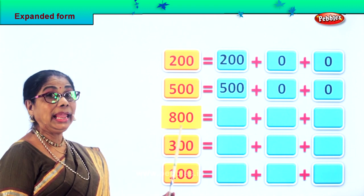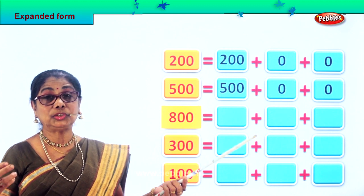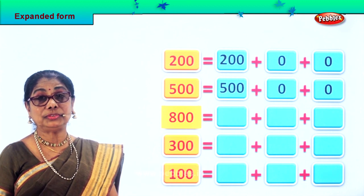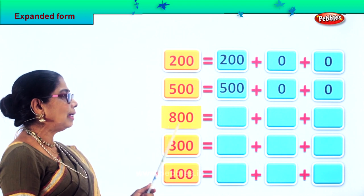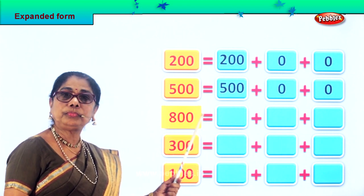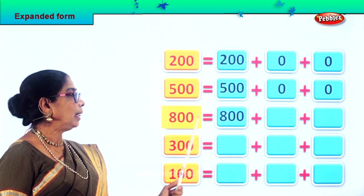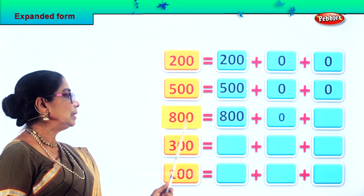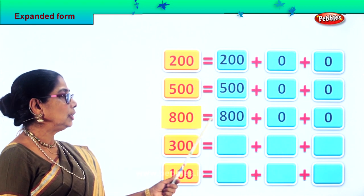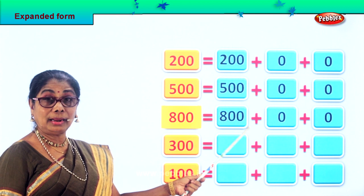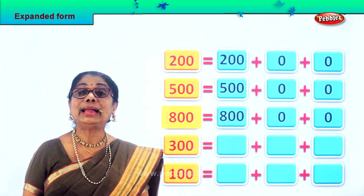Next we have eight hundred. Eight is in the hundreds place; tens and ones you have zero. So eight hundred is equal to eight hundred plus zero tens plus zero ones. Eight hundred is equal to eight hundred plus zero plus zero.